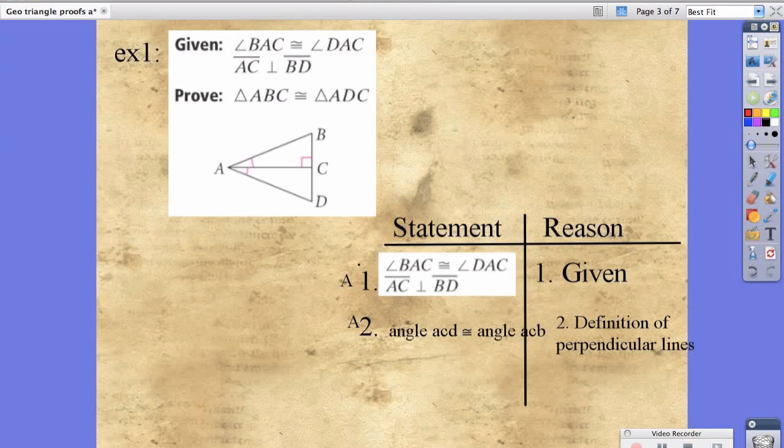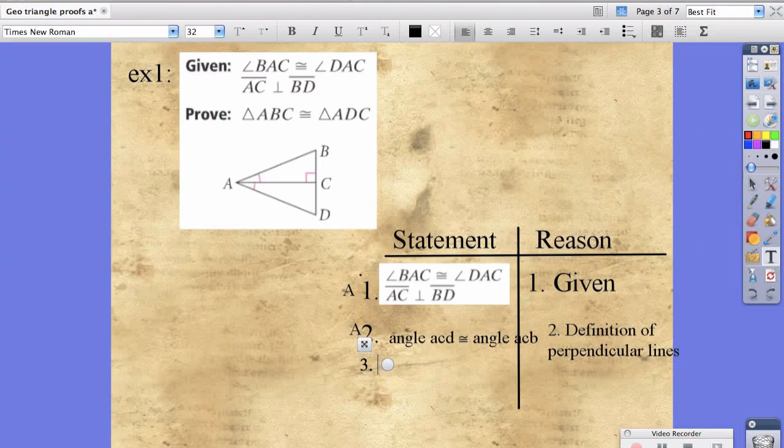If you remember from our last video, any time two triangles share a side, you can say that those two are congruent. Line segment AC is congruent to line segment AC. And that reason is because it is reflexive property, which is another side.